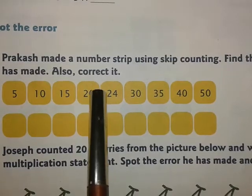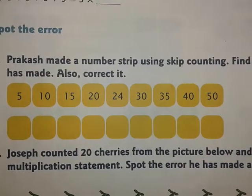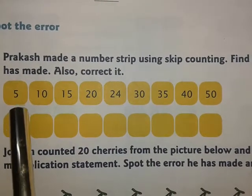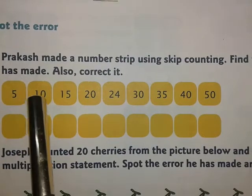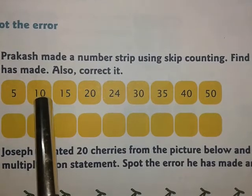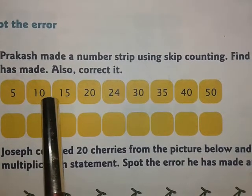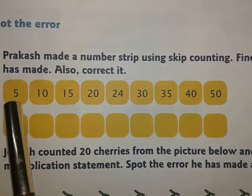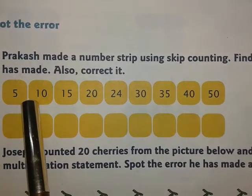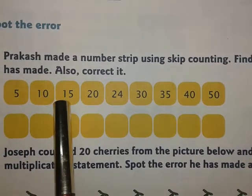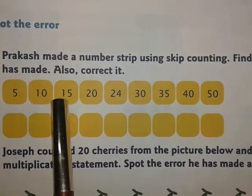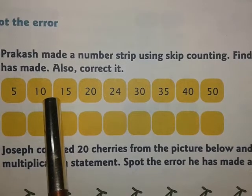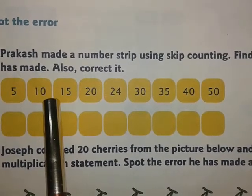Also correct it. Now skip counting you know, children — the difference between each number, the difference between the two numbers will be the same. 5 plus 5 is 10. Again 10 plus 5 is 15. So here the difference of 5 is given.